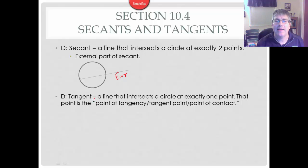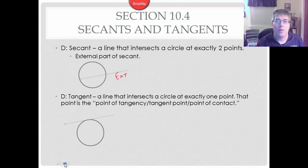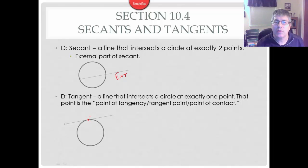A tangent line is a line that intersects a circle at exactly one point. That point is the point of tangency, or the tangent point, or the point of contact — right where our line just skims the circle. It's got a few different names, but essentially the tangent point. We've seen tangent in trig, and this is related to that, as you'll see as you further explore your math studies.